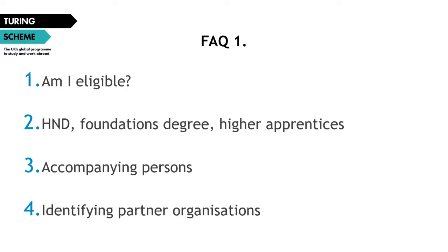We've had many queries relating to higher diplomas or foundation degrees and whether these should be FE and VET or HE. Any qualification that sits above level three in the National Qualification Framework and is therefore classed in the UK as HE must be applied under the HE sector of funding. There can be some variants based on the constituent countries of the UK, so if there's anything specific you want to clarify before applying, do contact the Turing helpline.